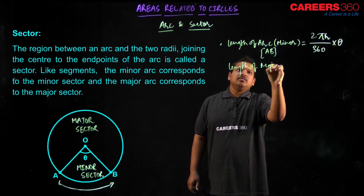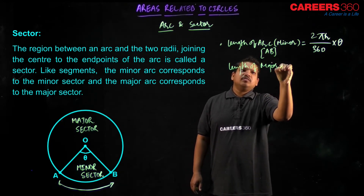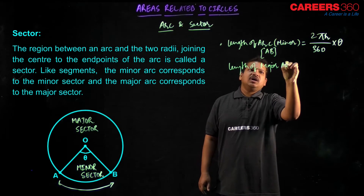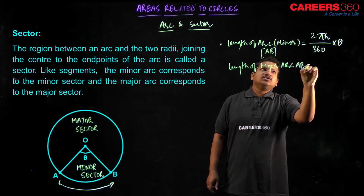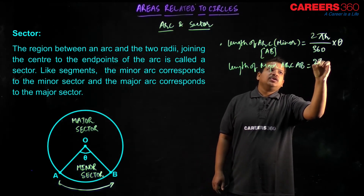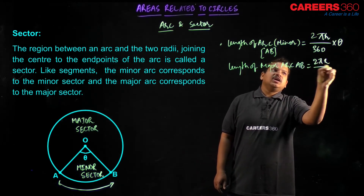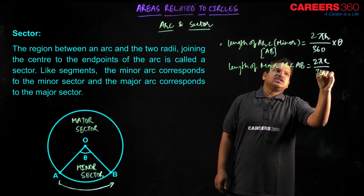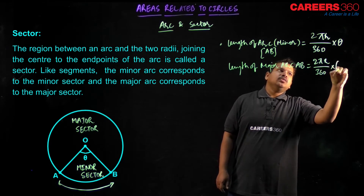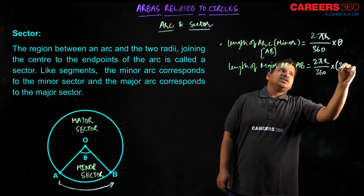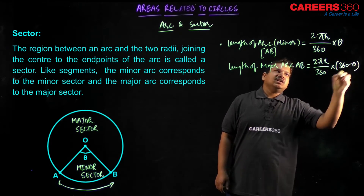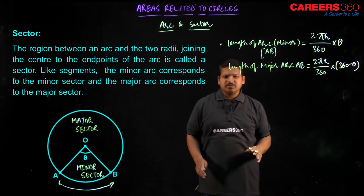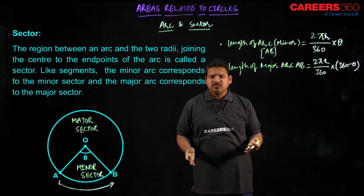Similarly, the length of the major arc would be (2πr / 360) × (360 − θ). I hope that makes sense to you.